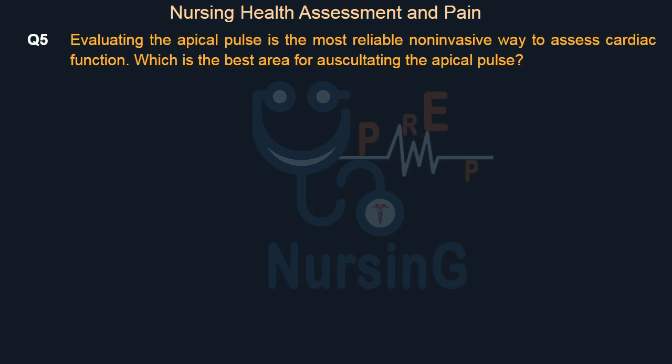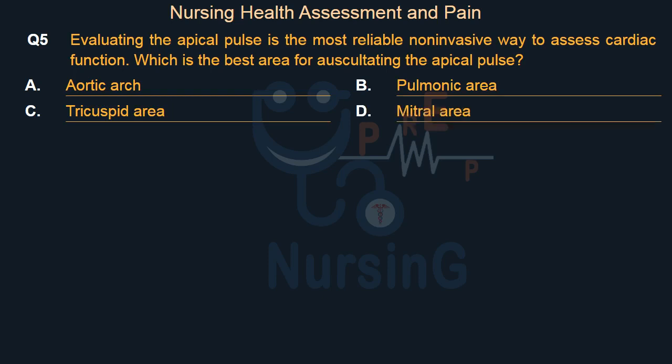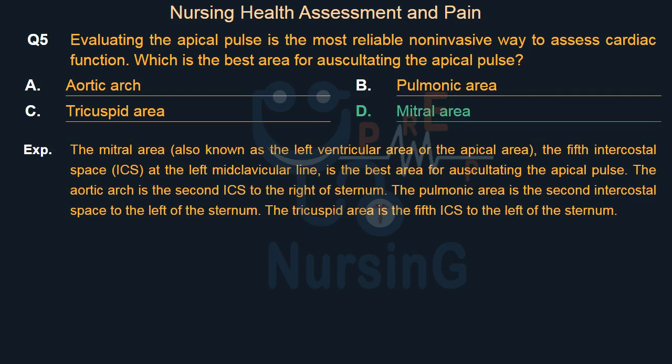Evaluating the apical pulse is the most reliable non-invasive way to assess cardiac function. Which is the best area for auscultating the apical pulse? Option A: Aortic arch. Option B: Pulmonic area. Option C: Tricuspid area. Option D: Mitral area. The right answer is Option D: Mitral area. The mitral area, also known as the left ventricular or apical area, at the 5th intercostal space (ICS) at the left midclavicular line, is the best area. The aortic arch is the 2nd ICS right of sternum; pulmonic is 2nd ICS left; tricuspid is 5th ICS left of sternum.